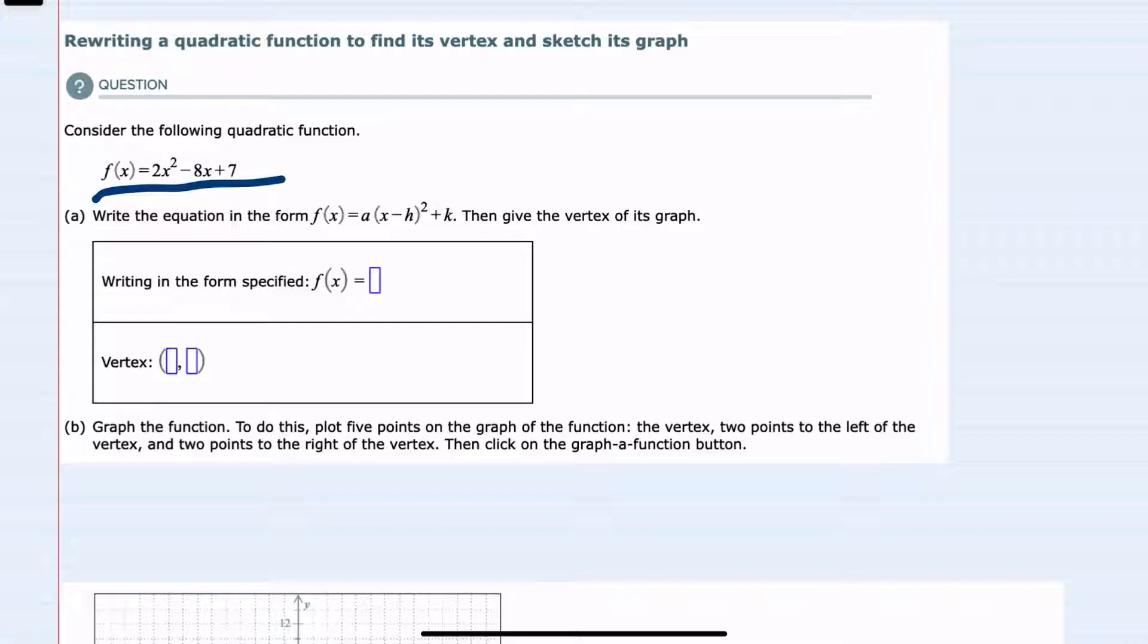We're given the function f(x) = 2x² - 8x + 7. For part a, we're asked to write the equation in the form f(x) = a(x - h)² + k, then give its vertex. Once we have it in that form, we'll be able to identify the h and k that make up the vertex.